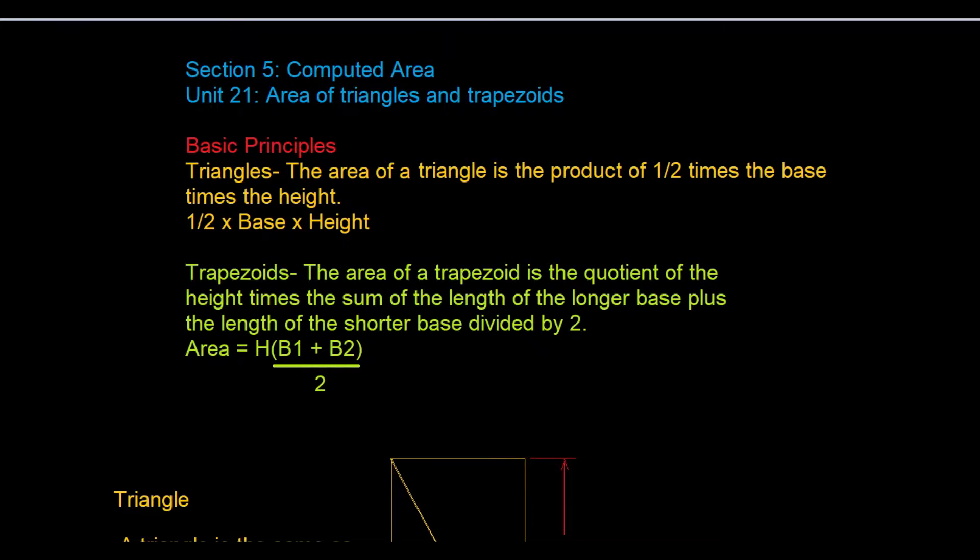In Unit 21 we look at areas of triangles and trapezoids. The basic principles are: in triangles, the area of a triangle is the product of one half times the base times the height.